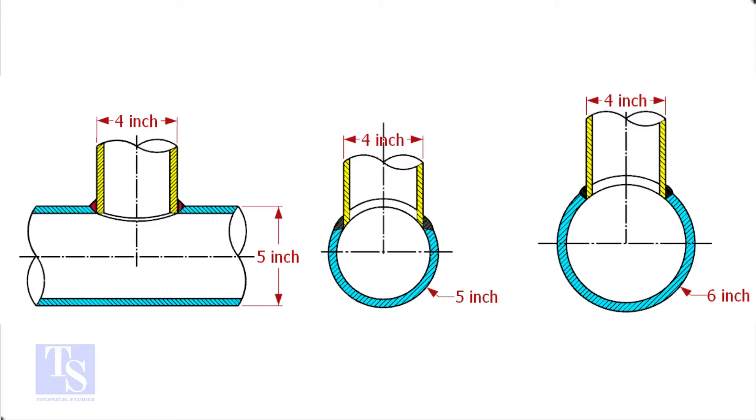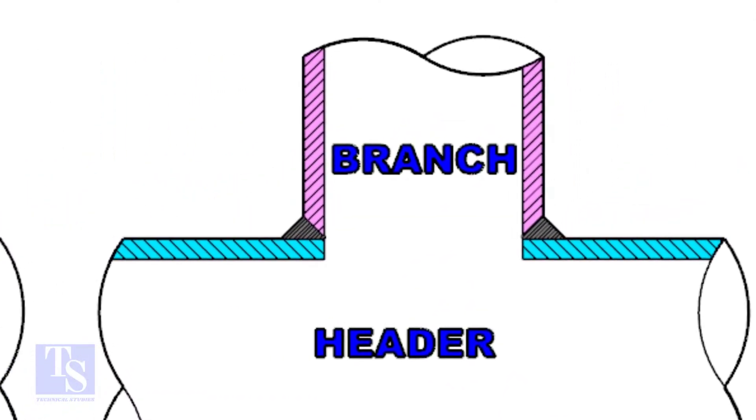Watch the section side view carefully. Check the stub-on view. The branch pipe sits on the header. The cut-back cutting of the branch pipe is done and the bevel also is prepared.